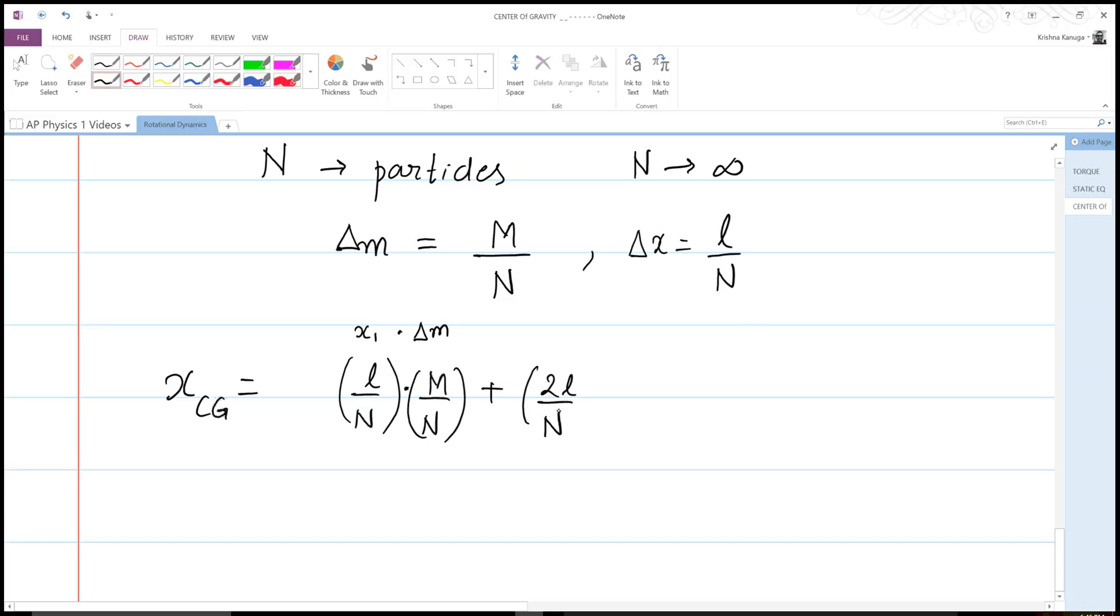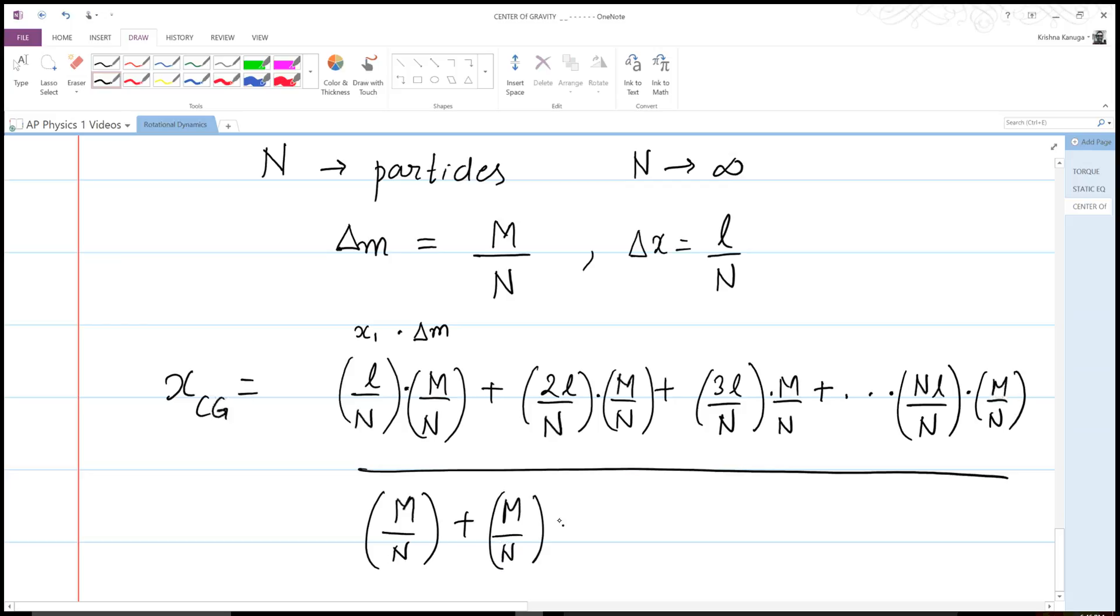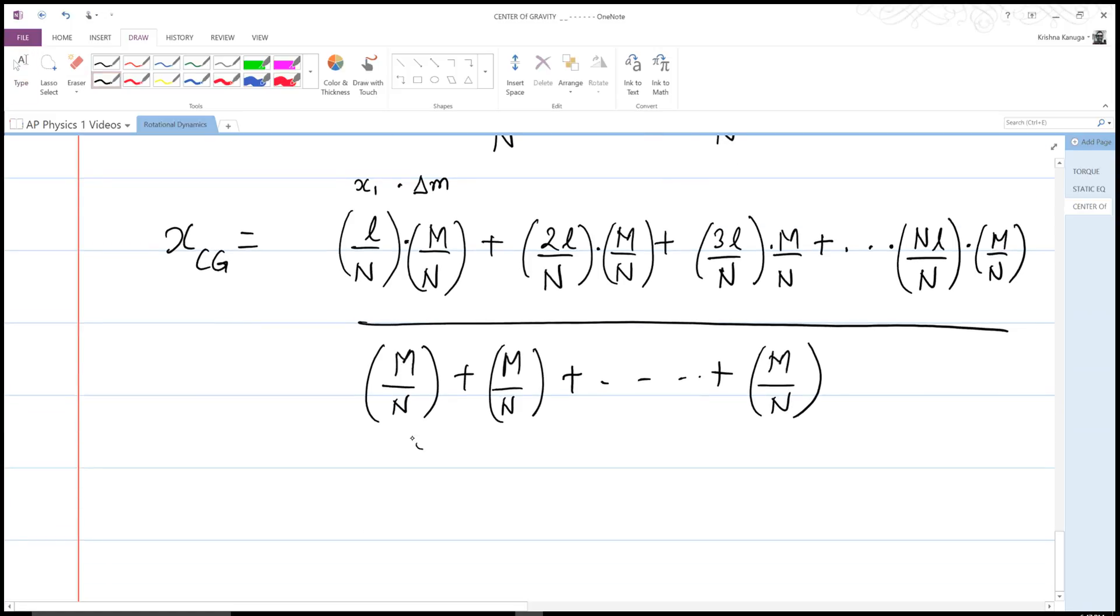Plus dot dot dot, until my last particle that will be located at NL over N, and its mass is obviously M over N. I'm going to divide this entire thing by the sum of all the masses, which is M over N plus M over N plus M over N, and we obviously do this N times. This is all done N times, so clearly the denominator ends up being simply equal to capital M.